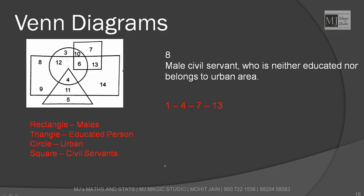Male civil servant R + S, who is neither educated minus T, neither belongs to urban area minus C. They are looking for R + S - T - C. The answer is 13. Correct option is 13.